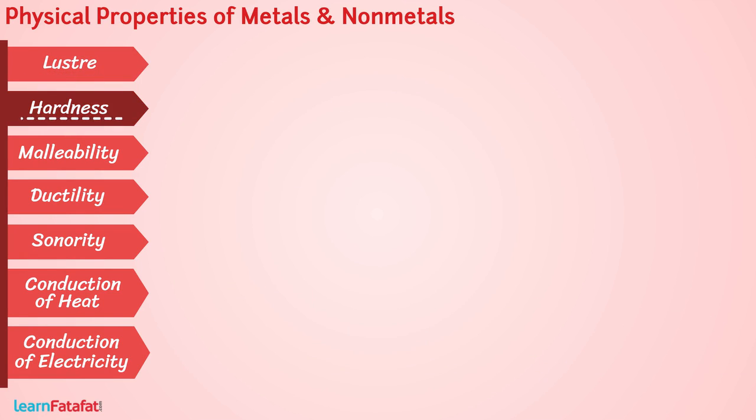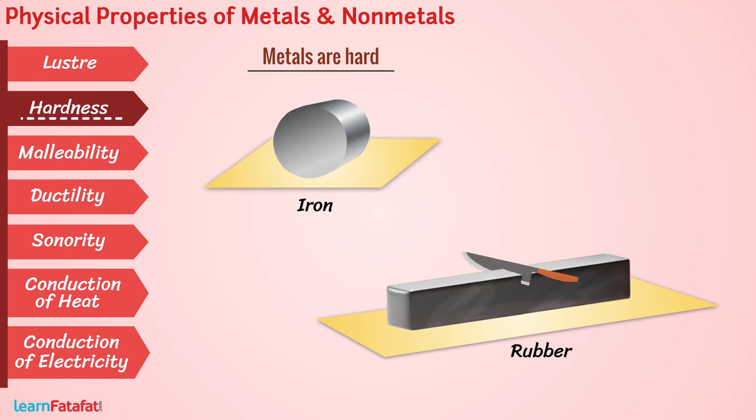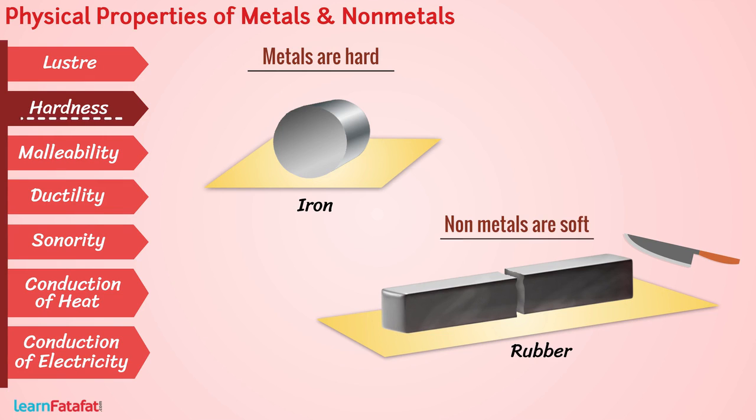Hardness: Try to cut iron with a knife. Isn't it very difficult? Because metals are hard. Now try to cut rubber with a knife. It's very easy. Thus, non-metals are soft.